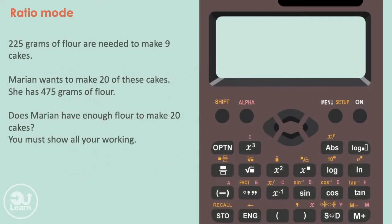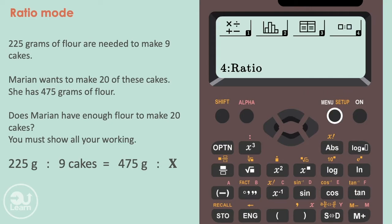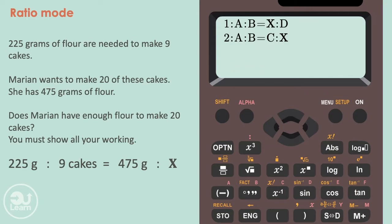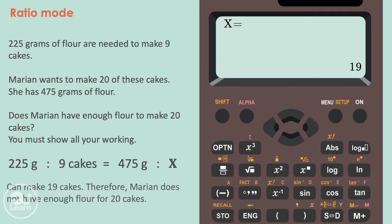Let's place our information into ratios. Once again, they're equivalent to each other. 225 grams to 9 cakes. 475 grams to our unknown value. The right value is missing. So we press menu, 4 and 2 on our calculator. Next, we put our values like we did before. Putting in our values and pressing equals after. Once we get to the end and press equals again, the amount of cakes 475 grams can make is 19. Therefore, Marianne does not have enough flour for 20 cakes.